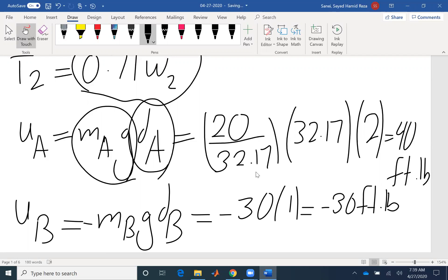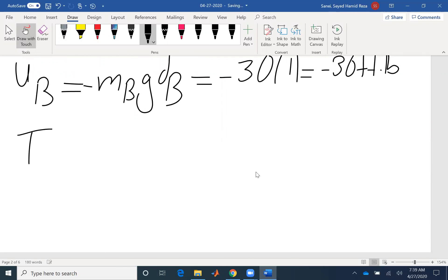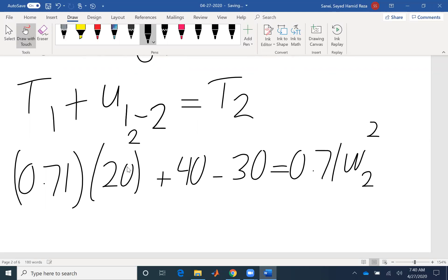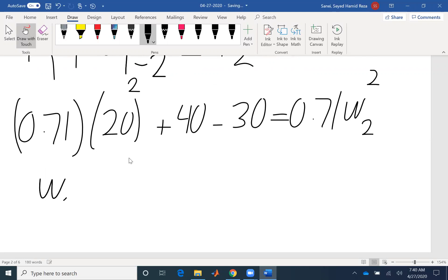If I put everything together, T1 plus U12 equals T2. T1 was 0.71 omega squared. Initial omega is 20 here. For the work done, I have a positive work of mass A, negative work of mass B. And at the end again, 0.71 omega 2 squared. The only unknown is omega 2. So I find omega 2 to be 20.3 radian per second. So I found the final angular velocity using work and energy.